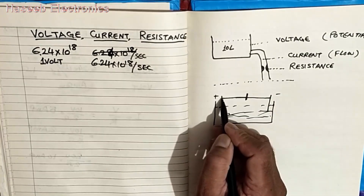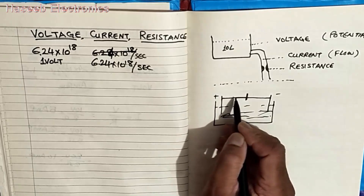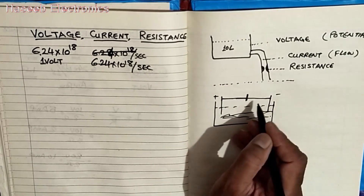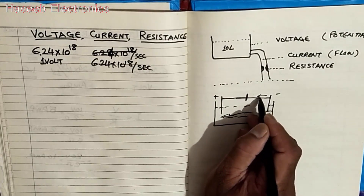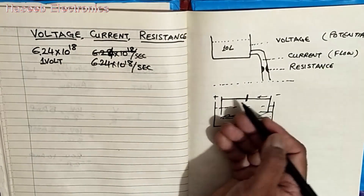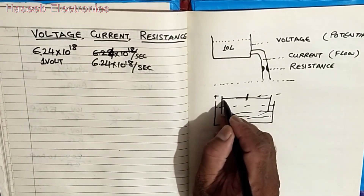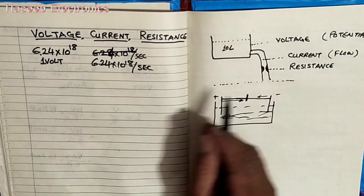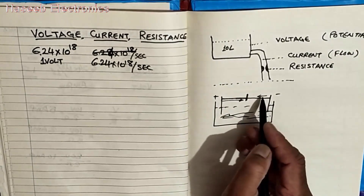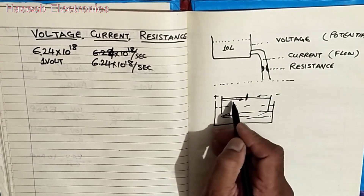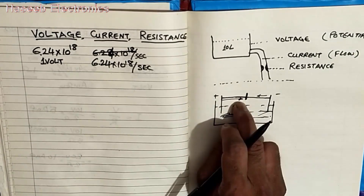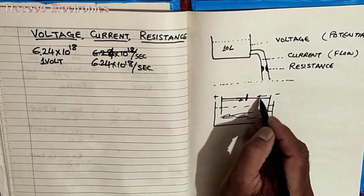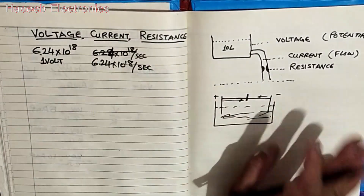Basically ammeters calculate the flow of electrons from one point to another. I am discussing electronic current. If we discuss conventional current, the holes move from positive to negative terminal. In electronic theory, current flows from negative terminal to positive terminal. In conventional current theory, current flows from positive to negative terminal. Both are the same — whether we consider 6.24 × 10^18 electrons or 6.24 × 10^18 positive charge carriers (holes) — the difference is only in theory: electronic current or conventional current.